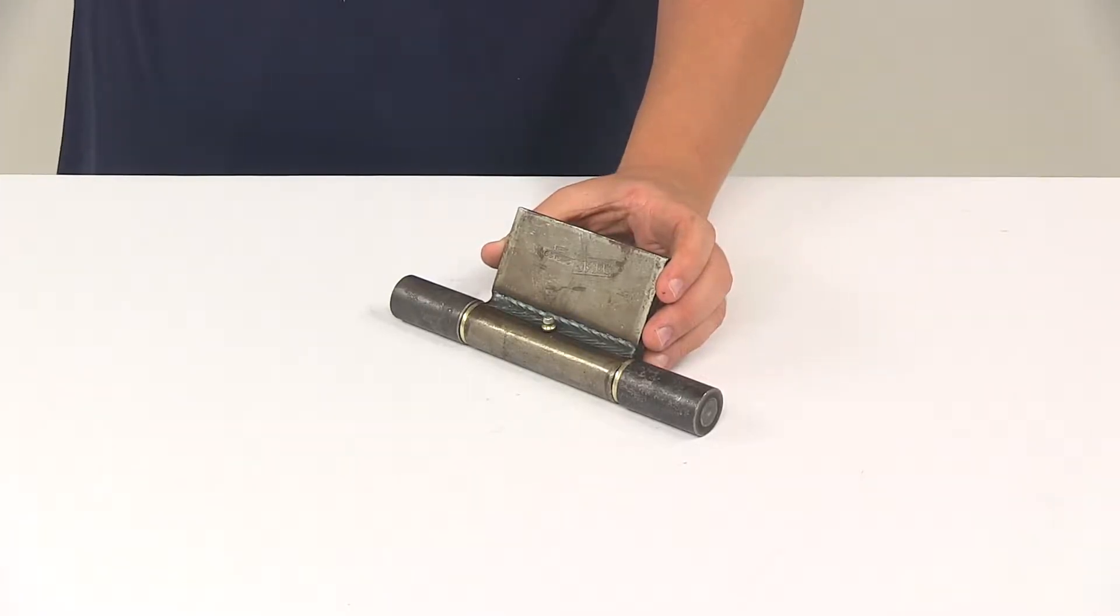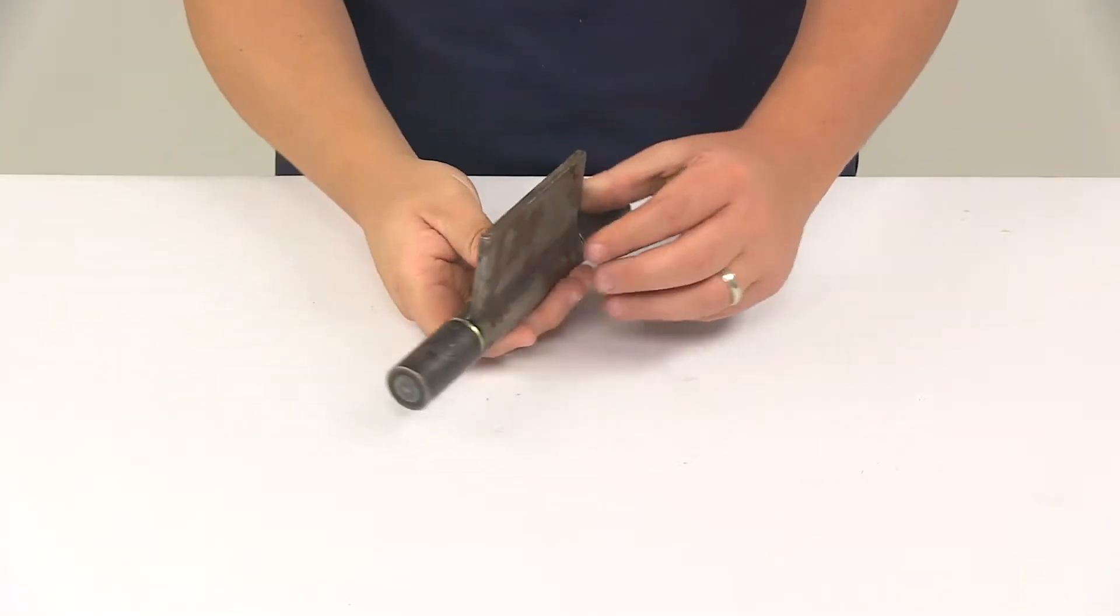Today we're going to be taking a look at the ramp door hinge from Polar Hardware. This hinge is designed for ramps or heavy access doors on your trailers.